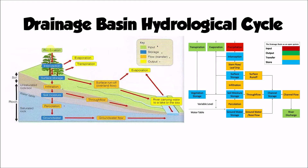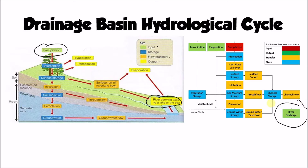The only input into our drainage basin system is precipitation — that is the only way water can be added into a drainage basin. It can't flow up and over a hill through the watershed; it's only able to get in through rainfall, snowfall, or other forms of precipitation. That precipitation then goes on a journey, ultimately making its way into a river, which takes it towards the sea — that output is called river discharge. Before that, water might return to the atmosphere through evaporation or transpiration.